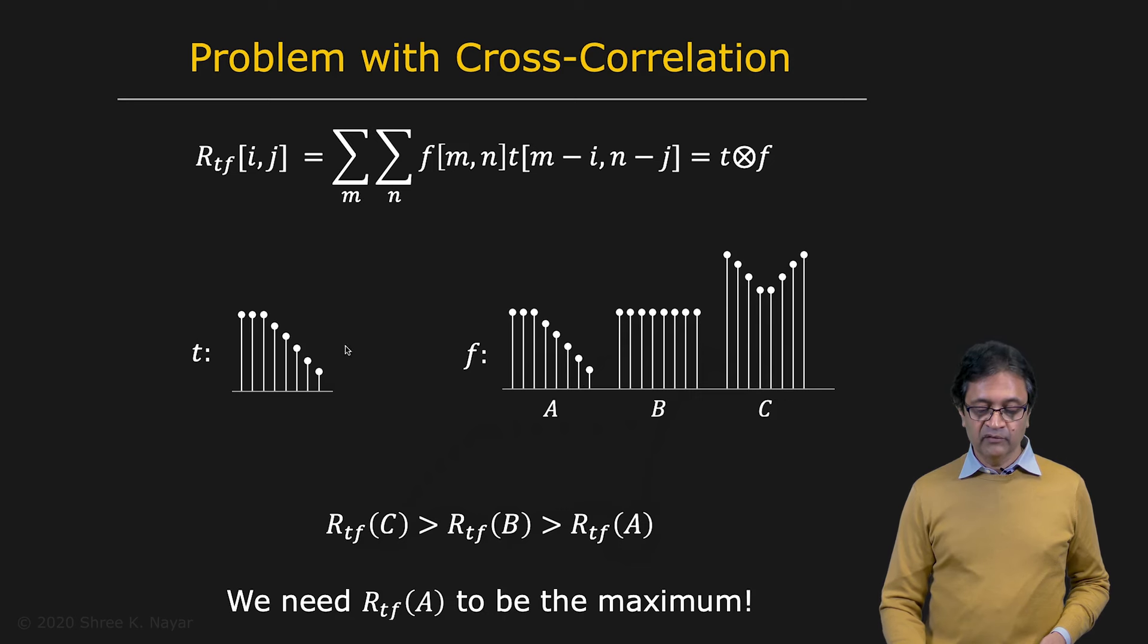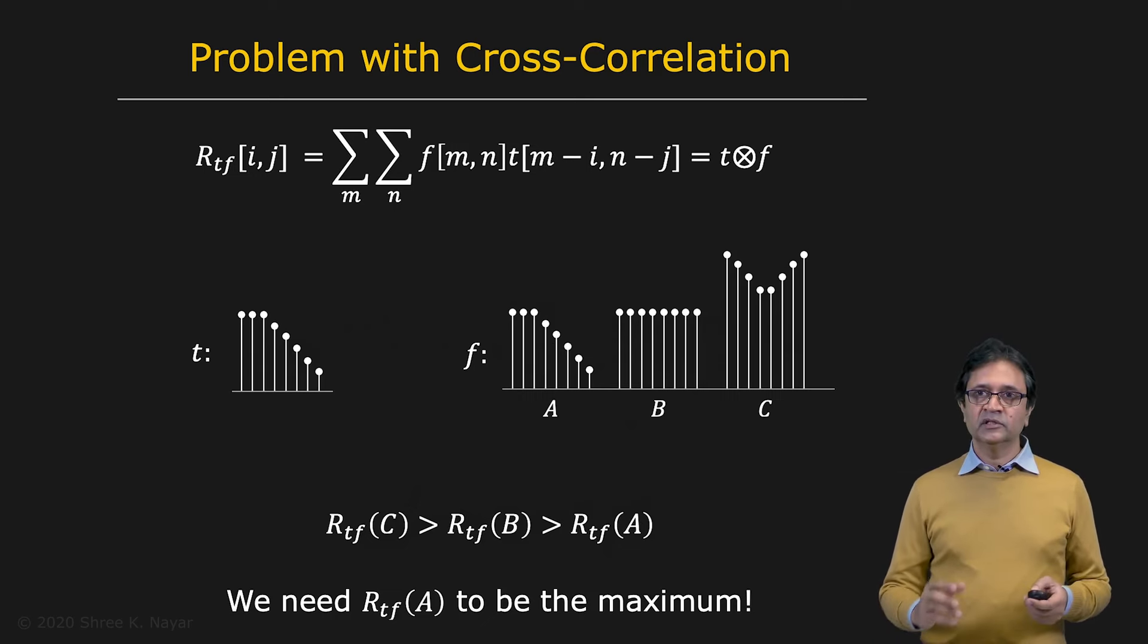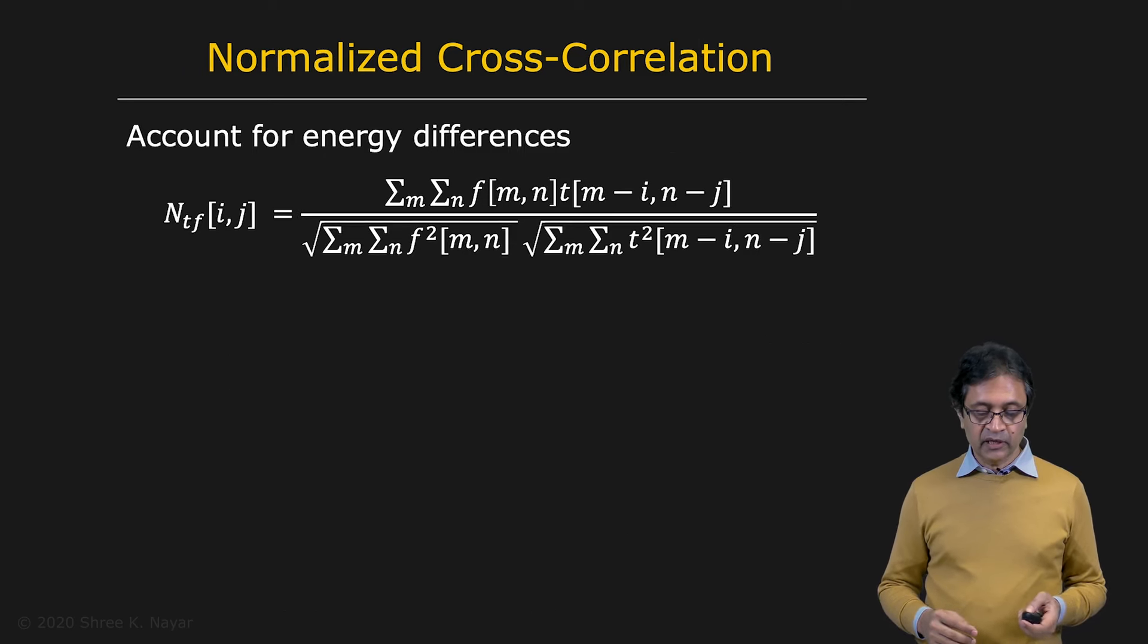And therefore, even though T doesn't match these two signals in terms of the pattern itself, the final result of the cross correlation is going to be highest for this, next highest for this, and the least for this. And that's definitely not the result we're looking for. So this is a problem with cross correlation, which we need to fix. And we do that by normalizing the cross correlation.